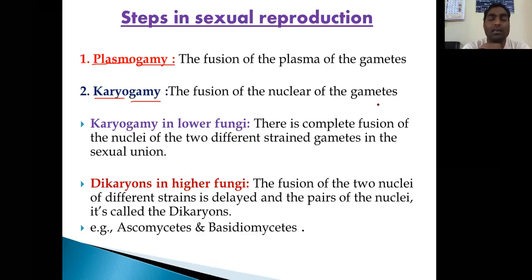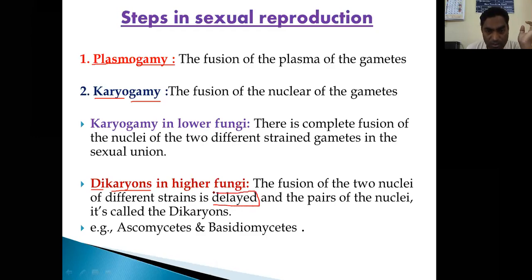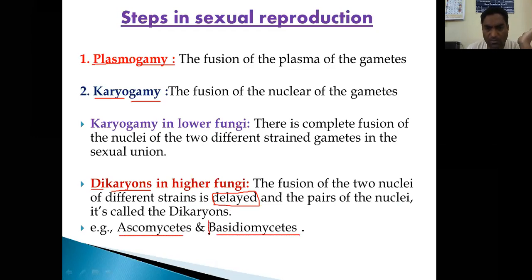In higher fungi, there is the concept of dikaryon. Di means two, karyon means nucleus. The fusion of the two nuclei of different strains is delayed, and the pair of nuclei is called a dikaryon. Examples are Ascomycetes and Basidiomycetes — in Basidiomycetes, like Agaricus. Let's examine what this dikaryon is.